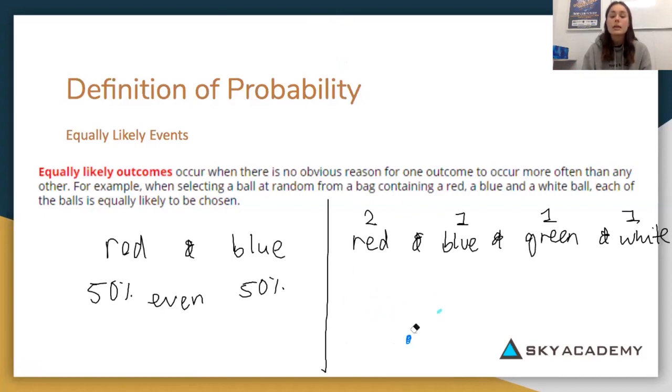Even is, in terms of probability, the same chance of selecting something, of selecting an event. So for example, I have a 50% chance of selecting red and a 50% chance of selecting blue. I have an even chance of selecting those two outcomes. I also have an even chance of selecting one of these four outcomes because they all occur at the same rate.